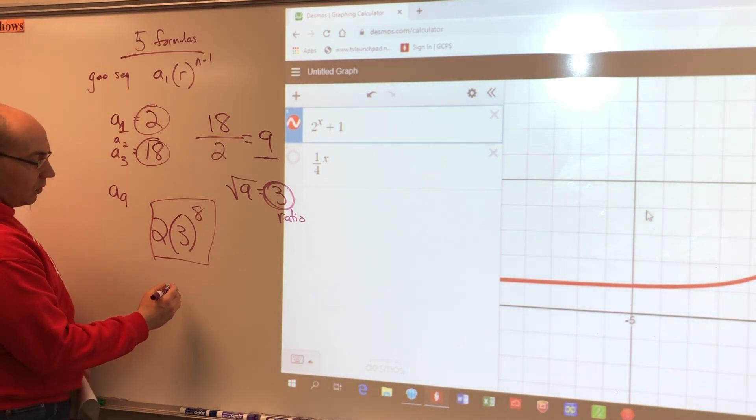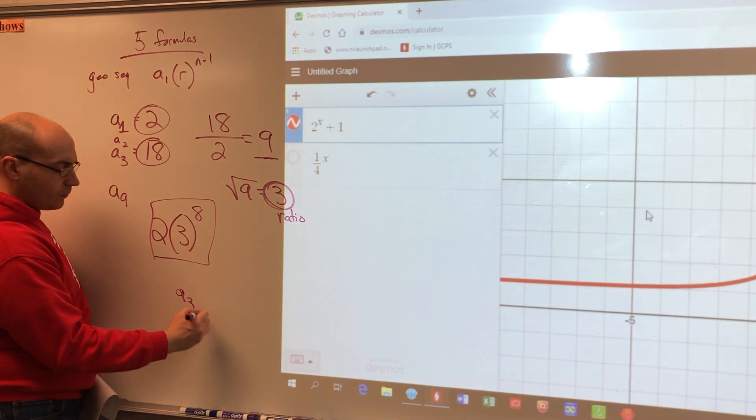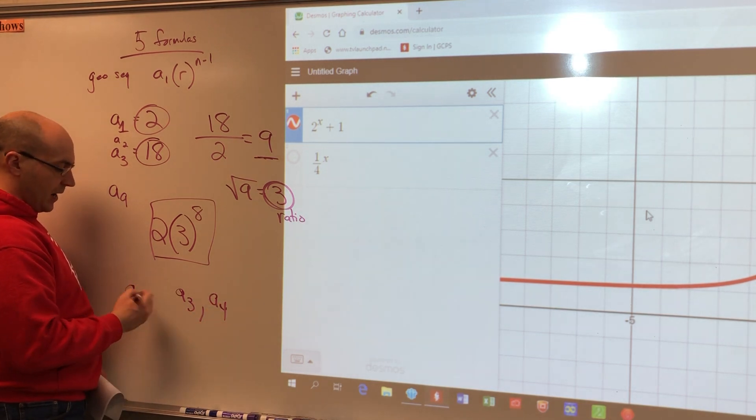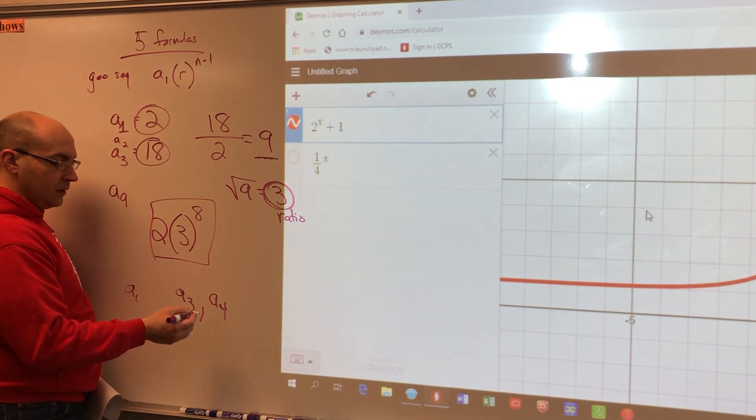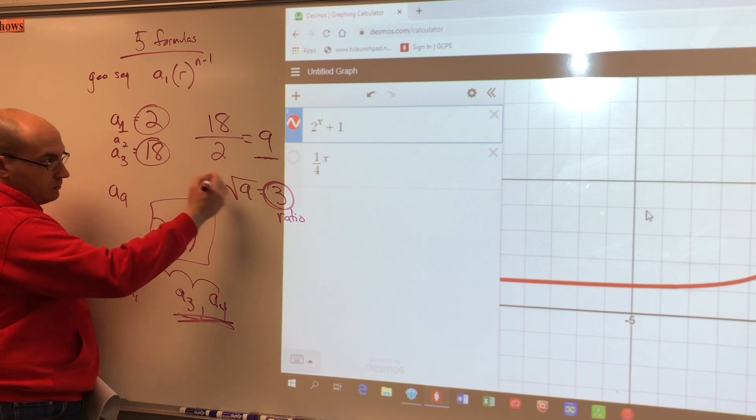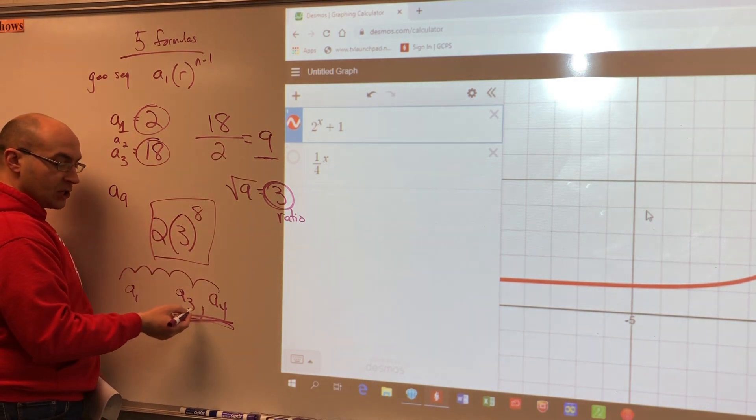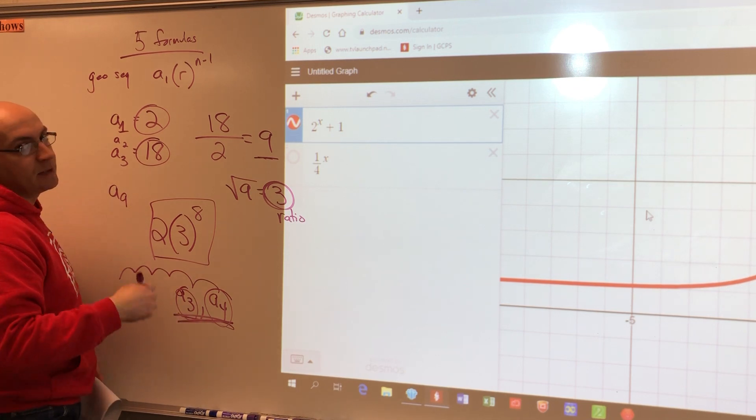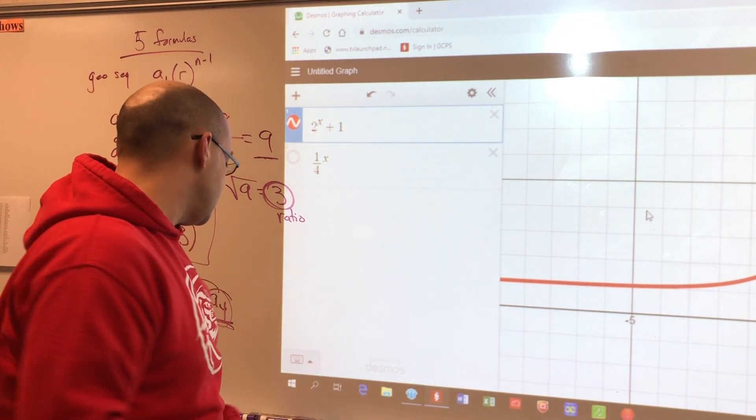This only works when I'm giving you a term and then I'm skipping one and giving you another one. If I were to give you though, like on the study guide, for example, I gave you a three and then I gave you a four and you're looking for a one or maybe another term. You've got to just divide and divide and divide and divide until you get backwards. There is no square root method with this. I'm giving you a term and then the one right after that. So you should be able to take this number and divide it by this term to get the ratio. That's sequences.